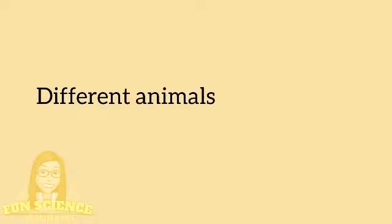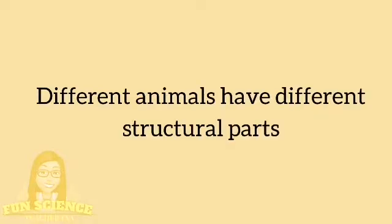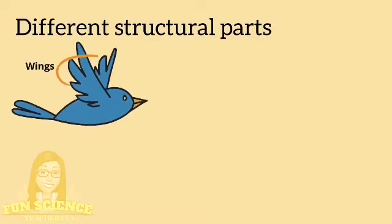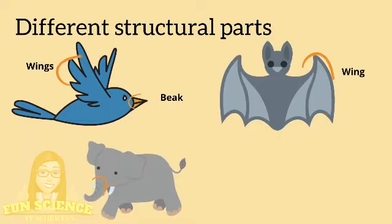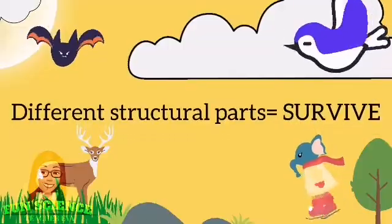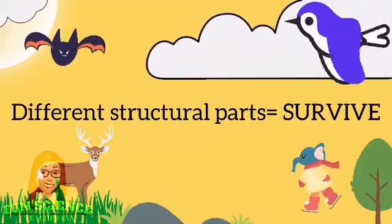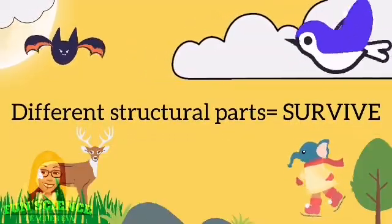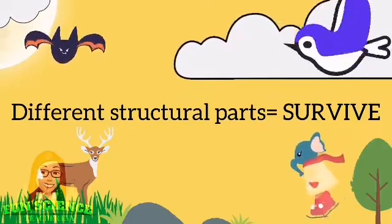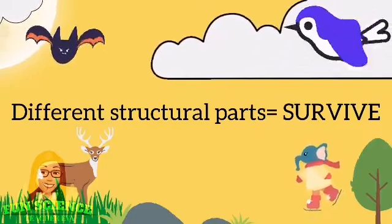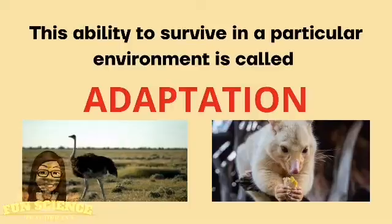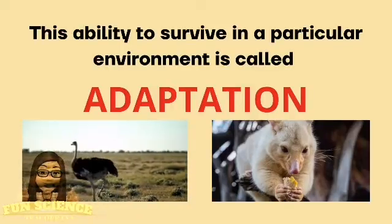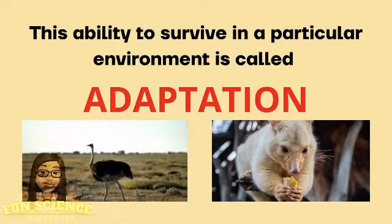Different animals have different structural parts. Their structural parts, such as the beak or bill and the wings of a bird, wings of a bat, tusks and trunk of an elephant, and antlers of a deer enable these animals to survive in their environment. They can move from one place to another to look for food and to escape from their enemies. This ability to survive in a particular environment is called adaptation.